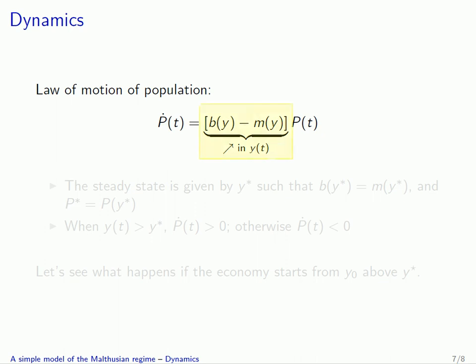What we can see in this expression is that b(y) is an increasing function of y(t) and m(y) is a decreasing function of y(t), such that the difference b(y) minus m(y) in total is an increasing function of y(t), income per capita. The steady state is characterized by b(y*) equal to m(y*), and then the steady state level of population p* equals p(y*).